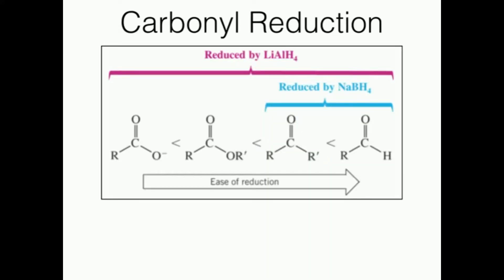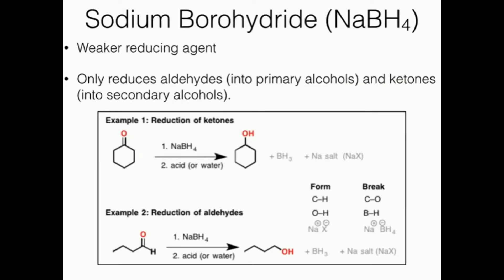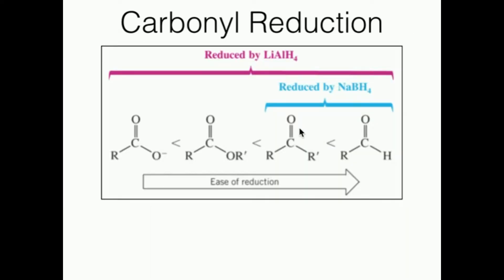In the previous video, we talked about basics of carbonyl reduction or C=O bond reduction, and we did a little bit with sodium borohydride. Sodium borohydride is a weak reducing agent, so NaBH4 was only able to reduce ketones and aldehydes into their respective alcohols. Out of some of the carbonyl-containing compounds, only ketones and aldehydes are reduced by sodium borohydride, and aldehydes are a little bit easier to reduce than ketones.